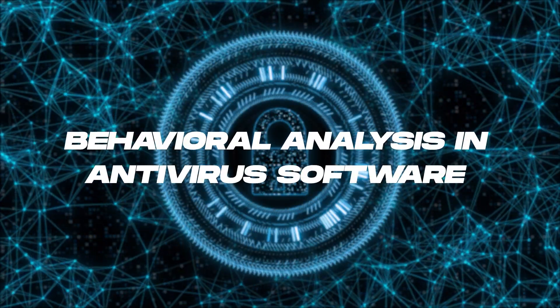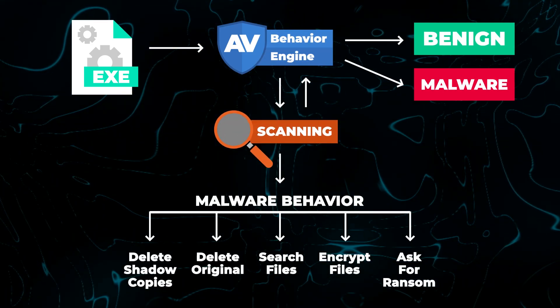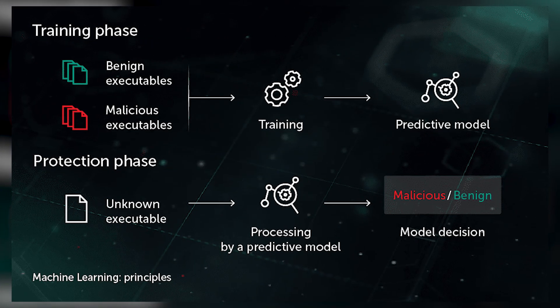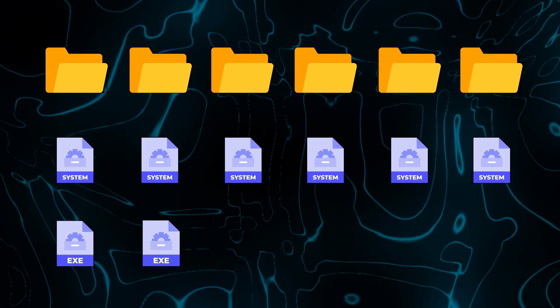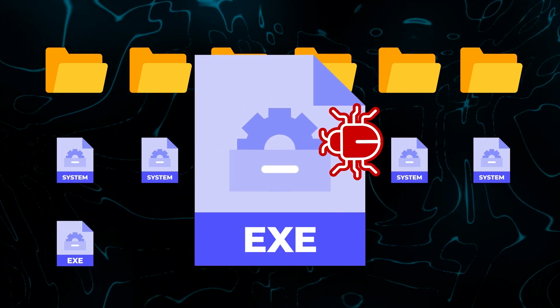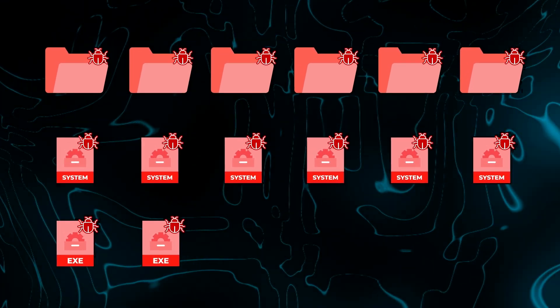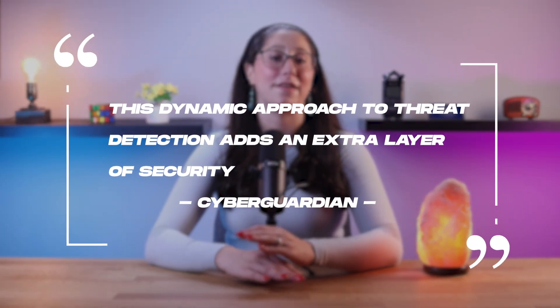In addition to file analysis, machine learning can also be used for behavioral analysis. This involves monitoring the activities and behavior of applications and processes on a system. By using machine learning models, antivirus software can detect suspicious activities that might not be captured by signature-based scanning. For example, if a seemingly harmless application suddenly exhibits behavior similar to malware — like attempting to encrypt files or establish unauthorized network connections — the antivirus can trigger an alert. This dynamic approach adds an extra layer of security.